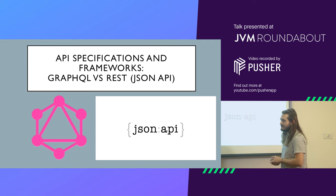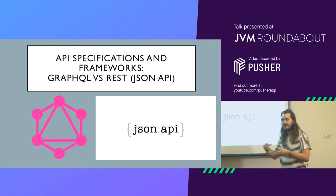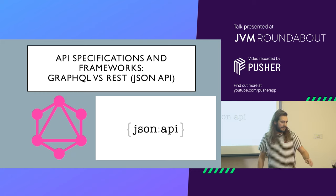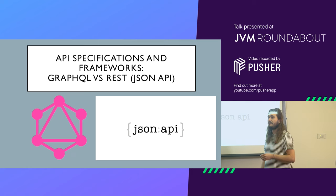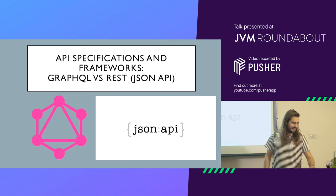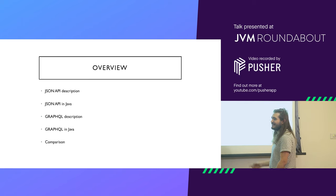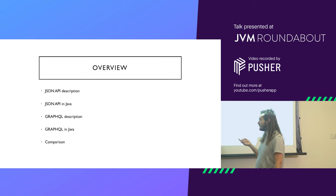My talk's going to be on API specifications, specifically GraphQL and comparing it to REST — but specifically JSON API, which is an implementation of REST, or a specification of a REST API. So first of all, who knows JSON API? A few people. Who knows GraphQL and has used GraphQL? A lot less people. Who's shitting themselves because they've never spoken in front of this many people? Yeah, that's just me. The overview I'll be doing is: quickly go through JSON API description, then what it looks like in Java, then GraphQL description, GraphQL in Java, and then a comparison of the two.